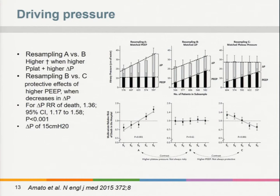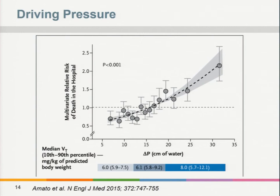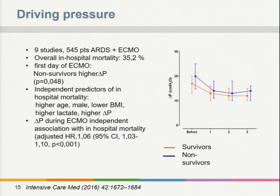A cutoff value of driving pressure for increased mortality is 15 cmH₂O, and an increase of just one standard deviation significantly increases mortality. Driving pressure is also important in patients ventilated on ECMO. A meta-analysis including nine studies with more than 500 ARDS patients on ECMO showed overall mortality of around 35%. Survivors had significantly lower driving pressures at the start of ECMO compared to non-survivors, confirming an independent association with in-hospital mortality.